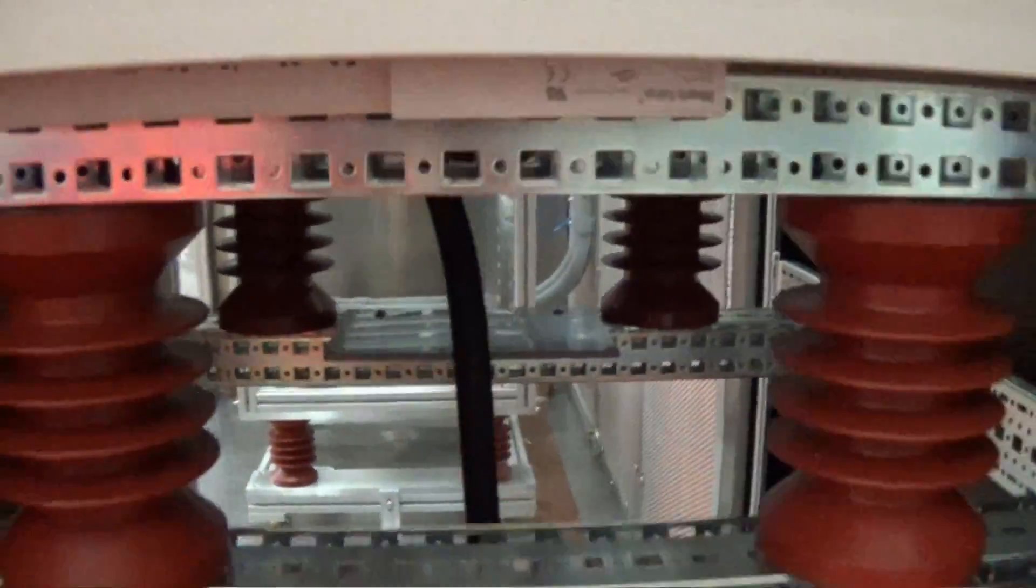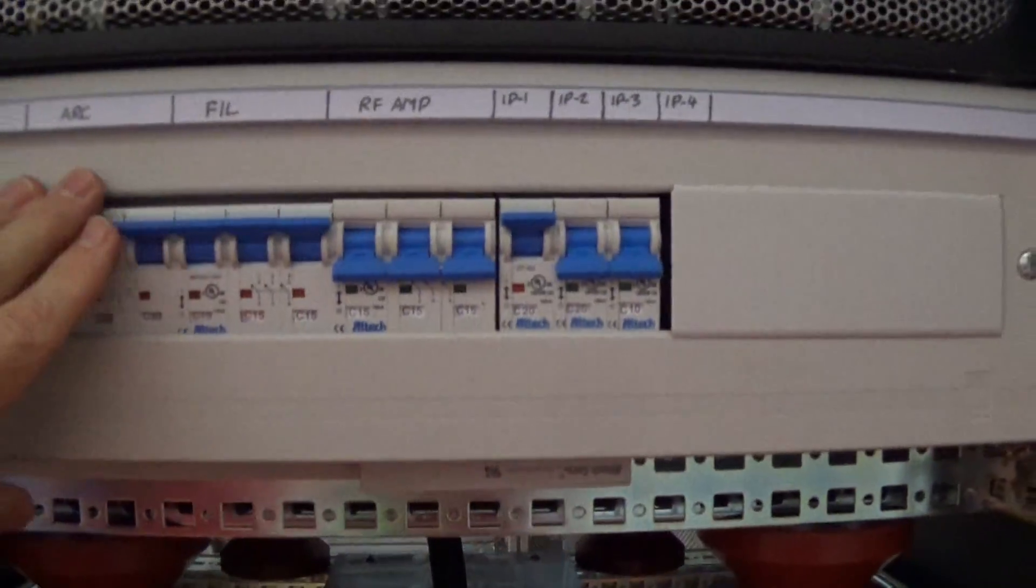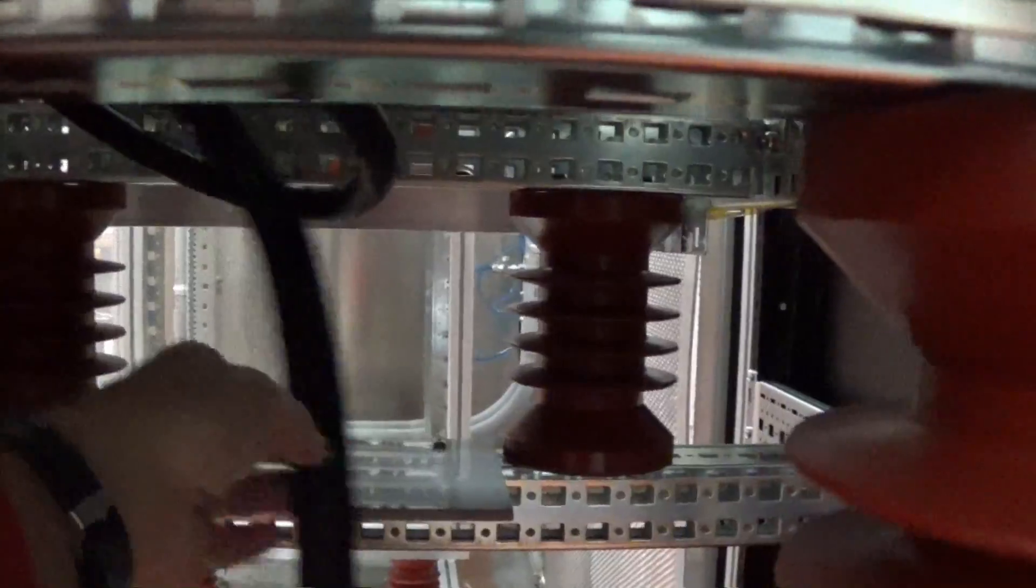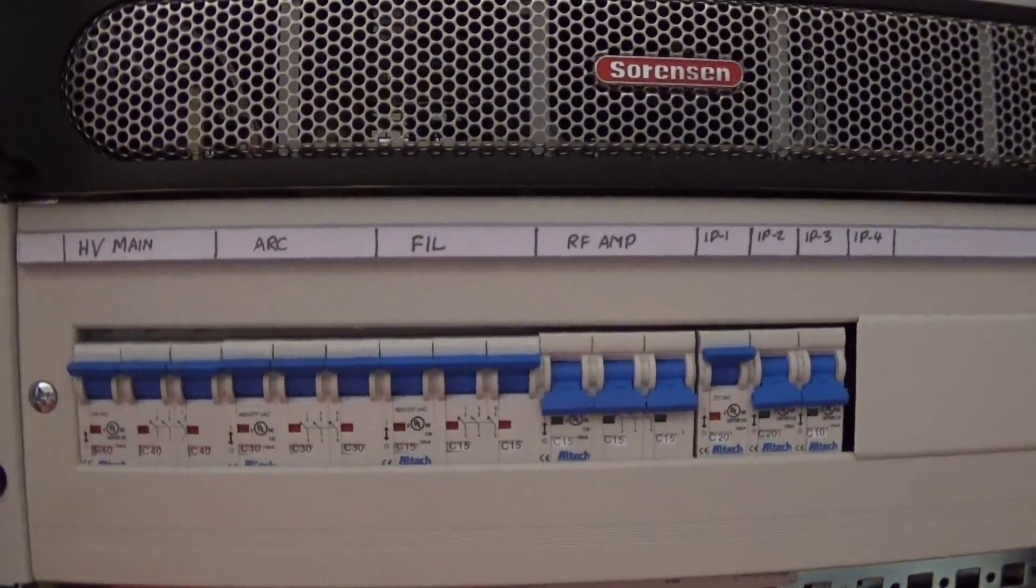So that allows us to bring in power into this rack down here at the bottom at the ground potential. And then have the power coming into this rack here, which is sitting at 30,000 volts. This is the cable here that provides power to the rack. And then it's got its own set of circuit breakers here as well.